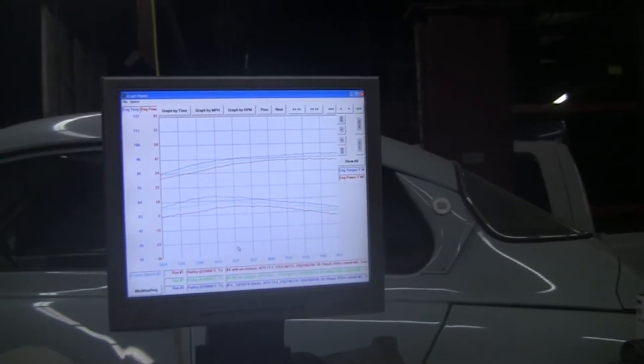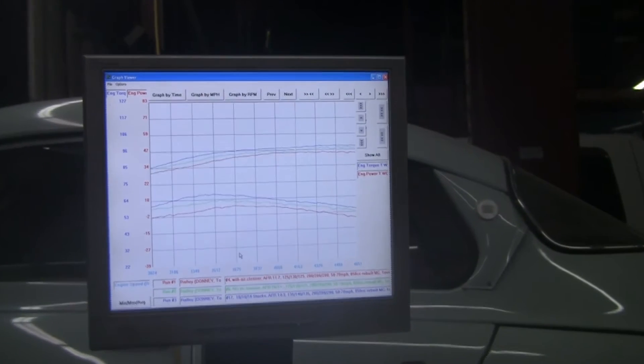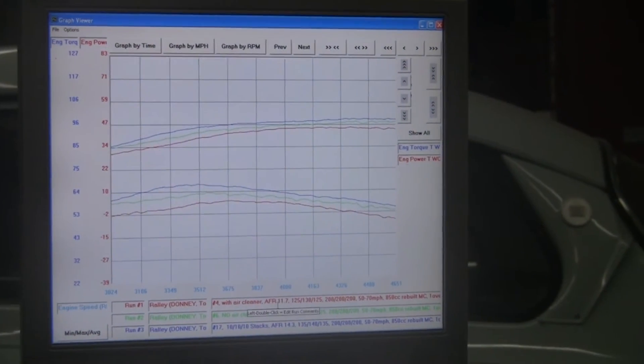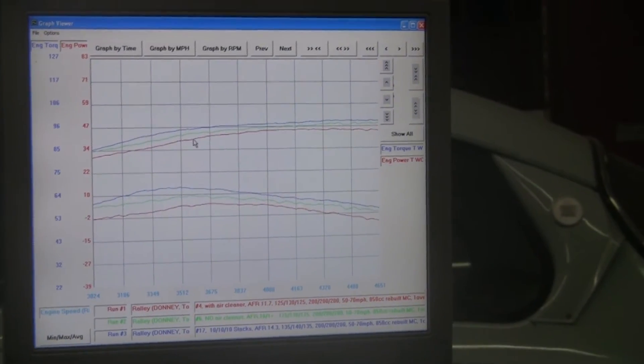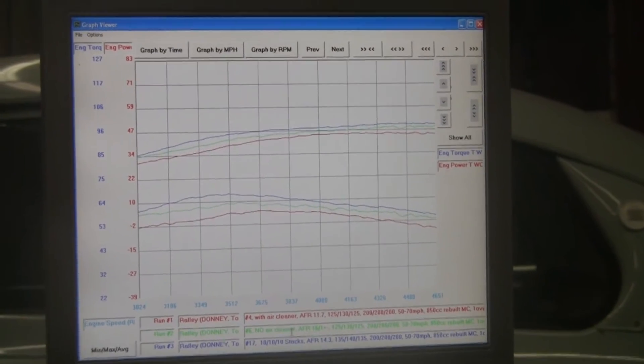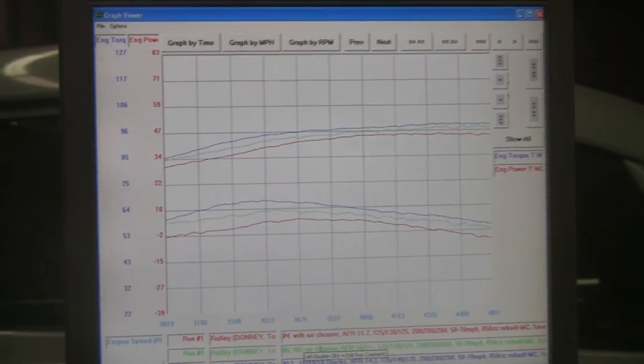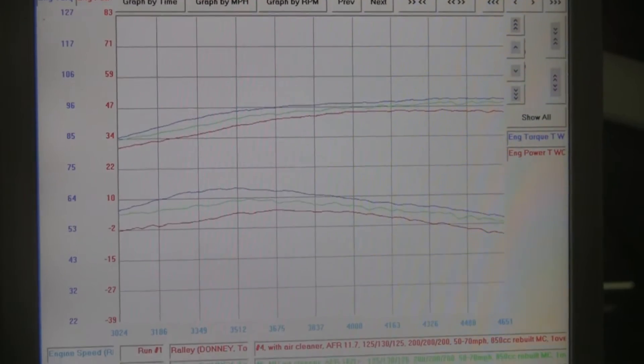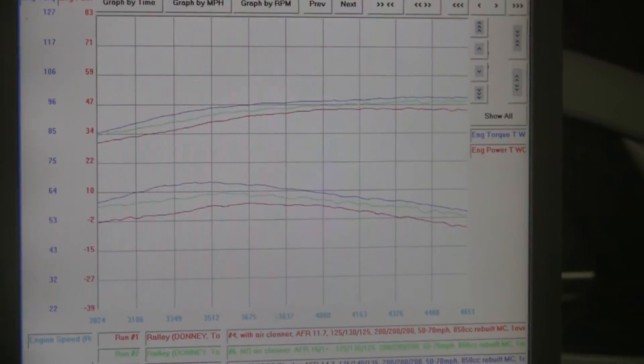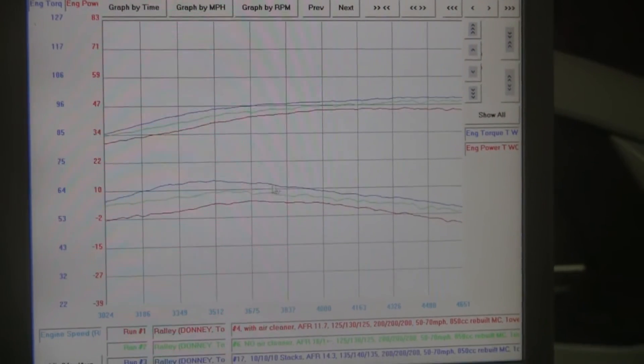Here's the three different results we have. The line in red, or the bottom line, shows with an air cleaner on. Then the green line shows with the air cleaner removed. And then the blue line is with our short 10 millimeter stacks. So the same length stacks is our top line, our blue line.